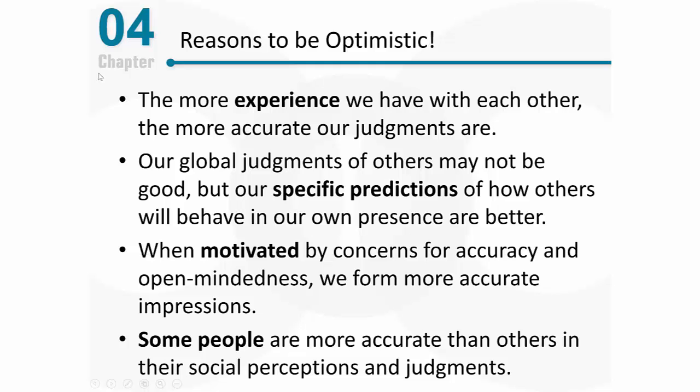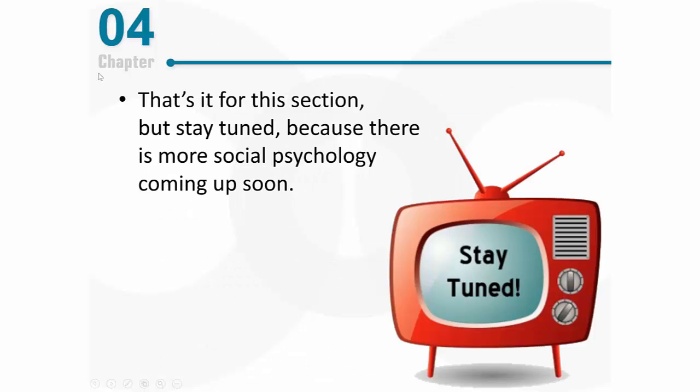Finally, some people are simply more accurate than others in their social perceptions and judgments. That leads us to conclude that we should study those people and figure out what's going on with these individual differences, because if we can figure out why some people are more accurate than others, then we can teach that. So there are some reasons to be optimistic. That's it for this section — stay tuned because there's more social psychology coming up soon.